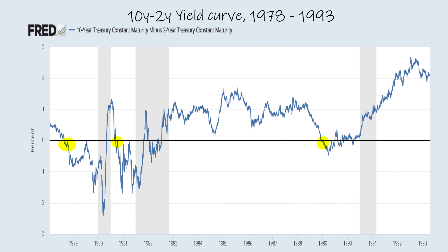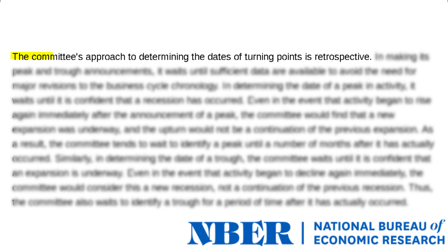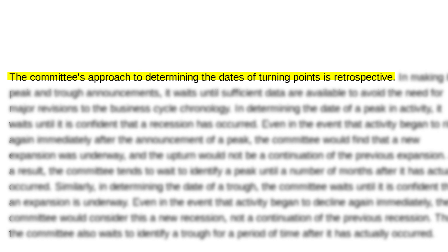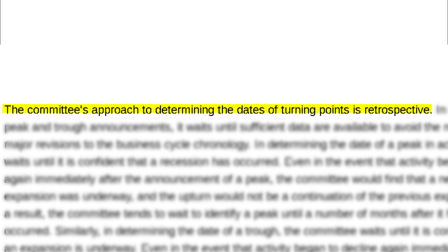In the last 50 or so years, equities have peaked six times after the start of an inversion and the economy has fallen into recession within about six to 24 months. Keep in mind that recessions are retroactively applied to time periods — you will find out you're in a recession some weeks to months after it has already begun.